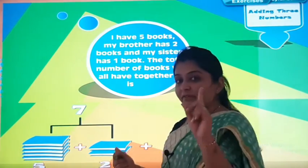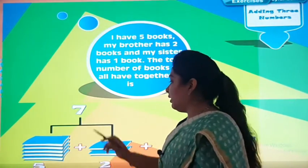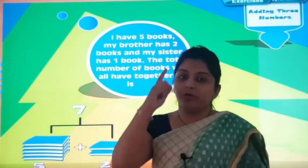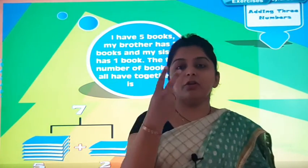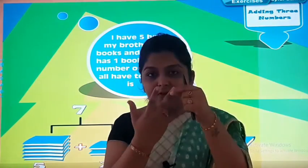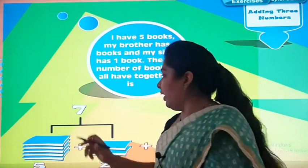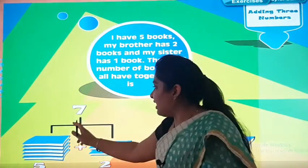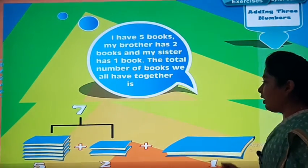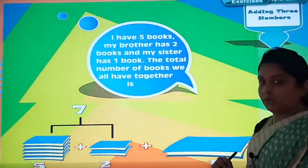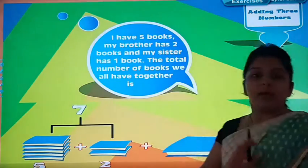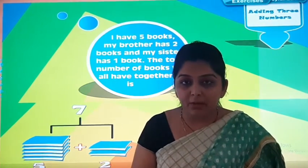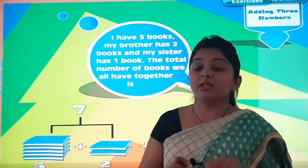Now dear children, one way is like this: first add 5 plus 2. Keep 5 on your mind and count 2 on your fingers — 6 and 7. So the total of those two is 7. Then 7 plus 1 book here is 8. That is one way of doing addition of 3 numbers.